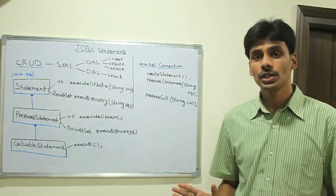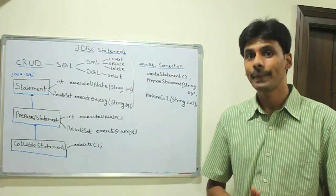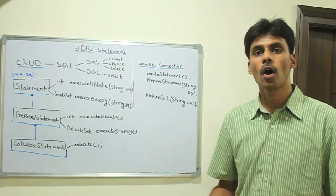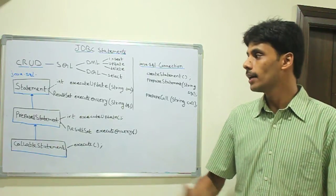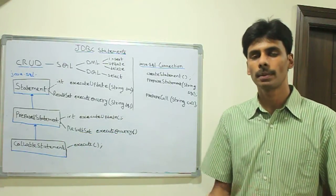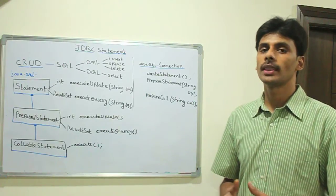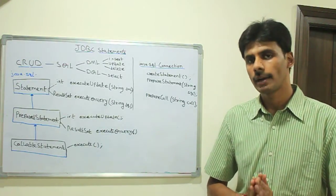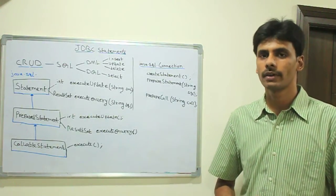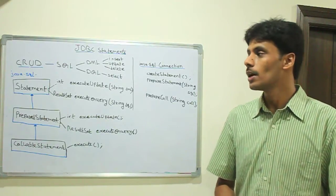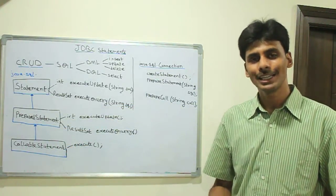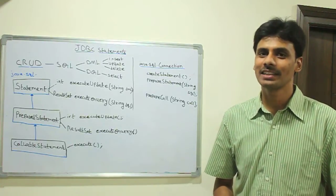From this presentation you have learned the three different types of statement interfaces available in the JDBC API. The advantage of PreparedStatement is that it keeps a pre-compiled version and should be used when executing the same query multiple times within your Java application. The CallableStatement should be used to execute stored procedures from within your Java application. In the next presentation we will do the hands-on where you will learn how to use the Statement, PreparedStatement, and CallableStatement. Until then, keep sharing and learning. Thanks for watching.